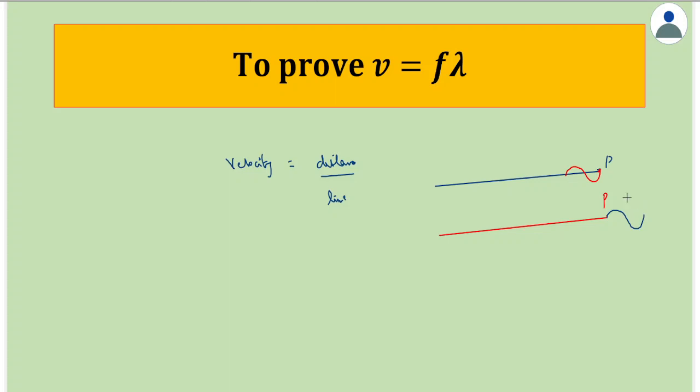We learned in the previous lecture that the time taken for one wave to cross a given point is called the time period. So if we call the velocity v, it equals the distance the wave covers, which is lambda (the wavelength), divided by the time taken, which is the time period T.